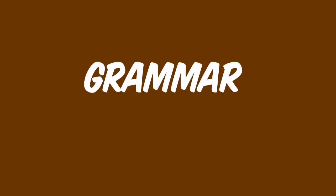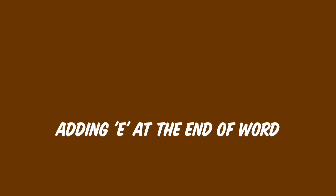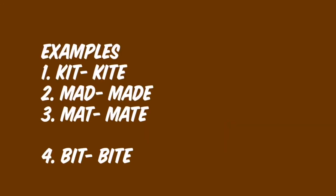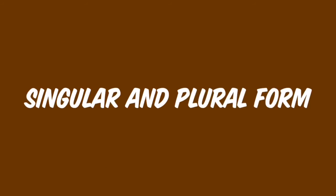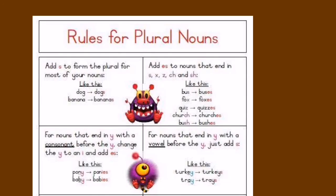Next, coming to the grammar part. In this, we have adding 'e' to a word at the end. For example, 'kit' — if we add 'e' at the end, it will become 'kite.' And 'mad' — if we add 'e' at the end, it will become 'made.' Like this.